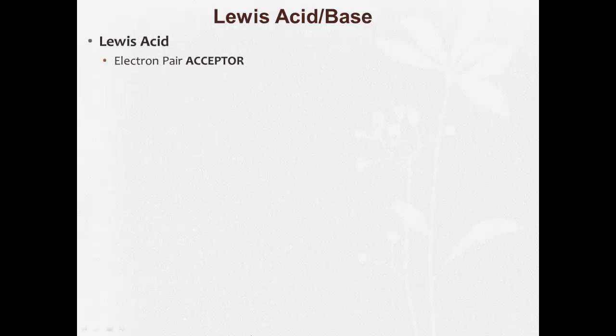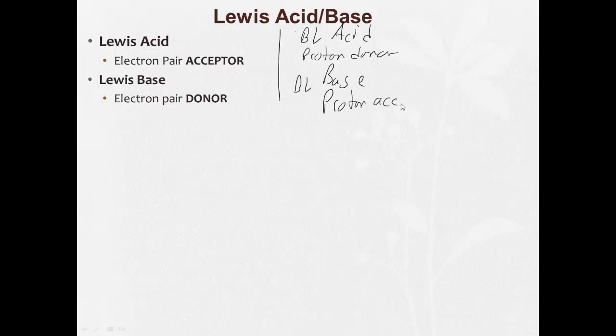Lewis acid and base. Lewis acid is an electron pair acceptor. A Lewis base is an electron pair donor. So this is different. Remember the Bronsted-Lowry acid is a proton donor. Lewis acid is an electron pair acceptor. Opposites. The Bronsted-Lowry base was a proton acceptor. The Lewis base is the electron pair donor. They are opposites.